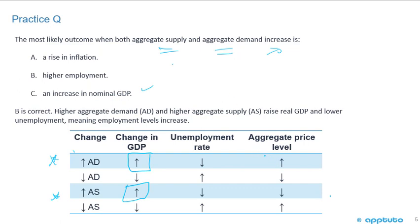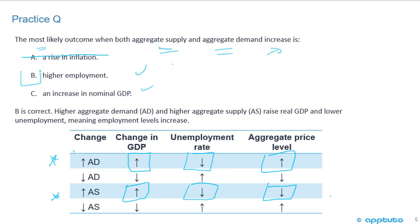In terms of inflation, they're moving in different directions: the aggregate price level is going up under increased aggregate demand, but going down with an increase in aggregate supply. So A is probably out, leaving you between B and C. The unemployment rate is going down for both increased aggregate demand and increased aggregate supply, so B seems correct as well. Since both B and C appear right, the answer is B — higher aggregate demand and higher aggregate supply raise real GDP and lower unemployment, meaning employment levels increase.